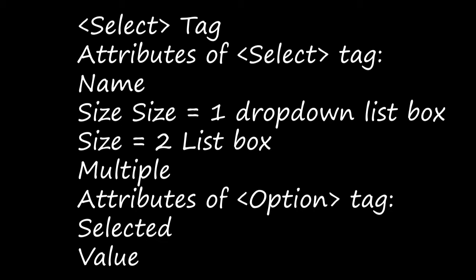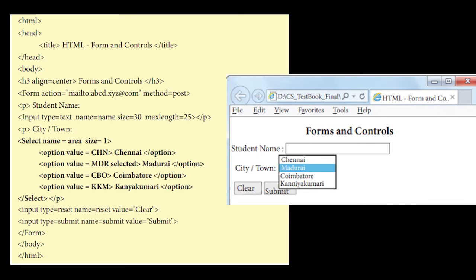Here if you see this example, you will get an idea. HTML, head tag, title tag, and closing the head tag, you know. After that they have opened the body tag, given the heading as forms and controls, and form action is equal to the name they have given, and method is equal to post. Then student name text box. And after that, city or town, they have given select name is equal to area, size is equal to 1. Option value - first they have given Chennai, Madurai, Coimbatore, Kanyakumari. Each line will have each name: Chennai then closing the option tag, Madurai then closing the option tag, then closing the option tag, and at last they have closed the select tag.